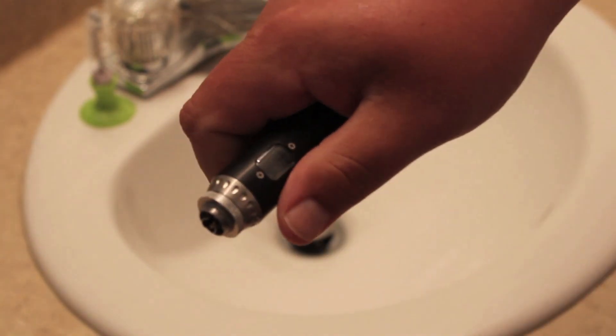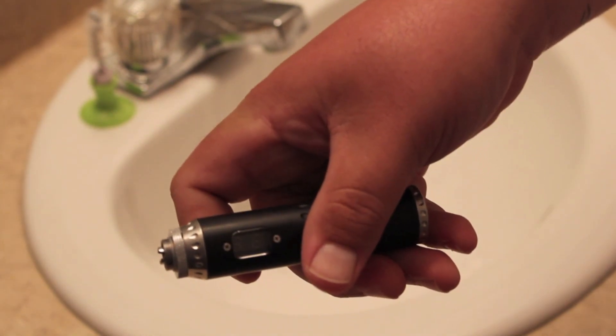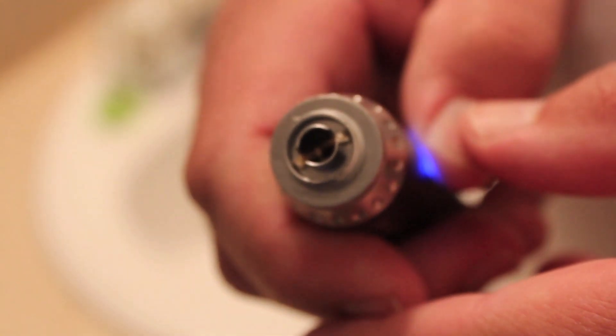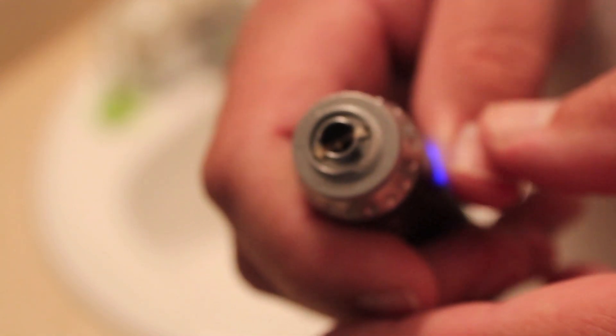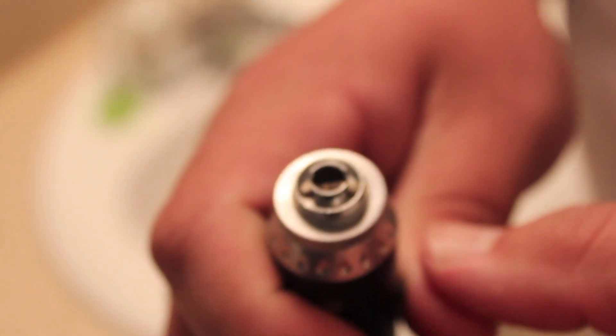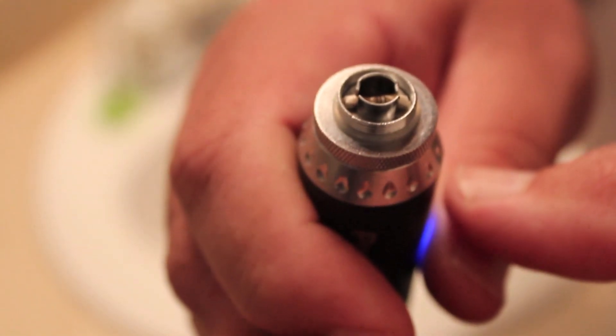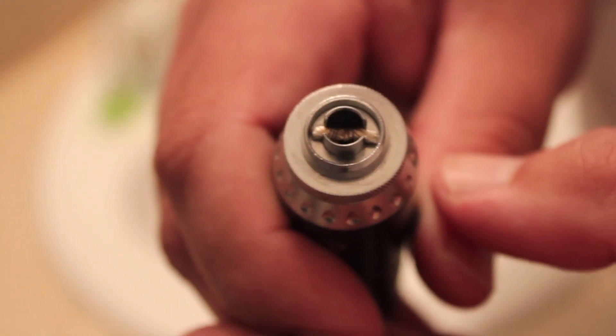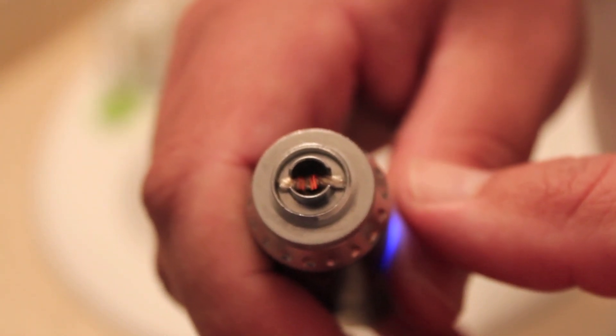And our device should be set at 3.5 or 3.7 volts to start off with. And then you just want to pulse the battery. You can see after a couple times you don't have to blow on it. It'll help blow the crud off that's burning off. But blow on it a little bit and you can see it's starting to light up.